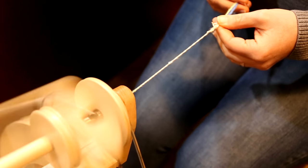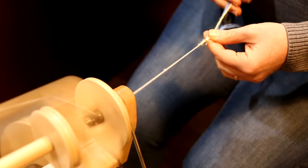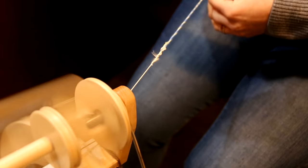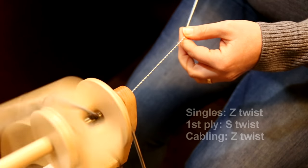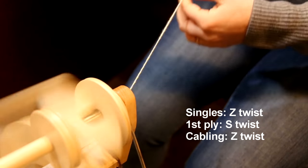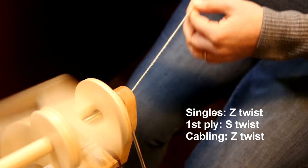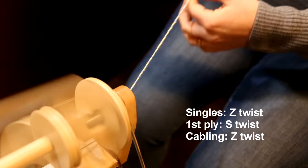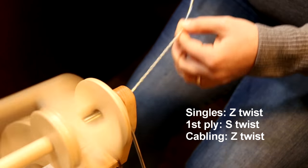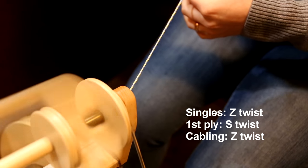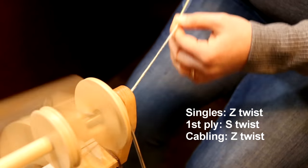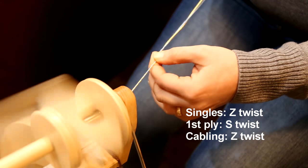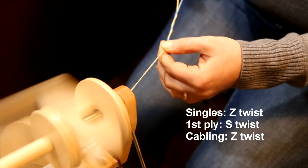And I ply those two yarns together, so I take the two ends and you'll notice that my wheel is now going Z twist again. So when you are plying up your two-ply, you're going to be plying Z twist again.